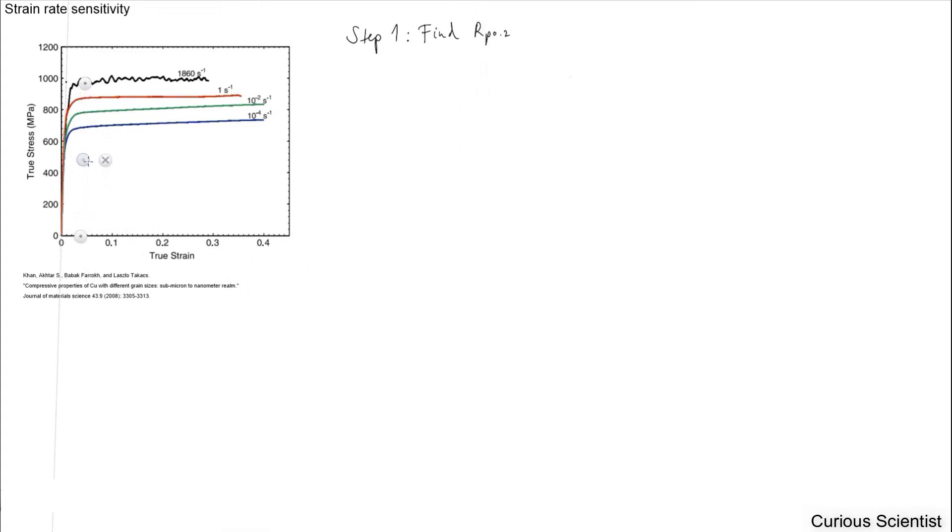You just have to find the elastic part of the flow curve and fit a linear equation on that. Here I'm just drawing a line parallel with the elastic section. Once you have that equation, that will look like an equation of a line, and that has to be shifted to the 0.2 proof strength. So basically what we have here is we move to the 0.2 and draw a line.